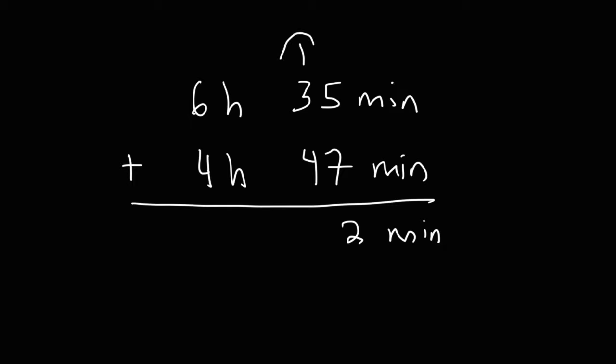And then we have 1 plus 3 plus 4. 1 plus 3 is 4. 4 plus 4 is 8. So we have 82 minutes. Now, keep in mind, 1 hour is equal to 60 minutes. But we're going to talk about what to do with that later.